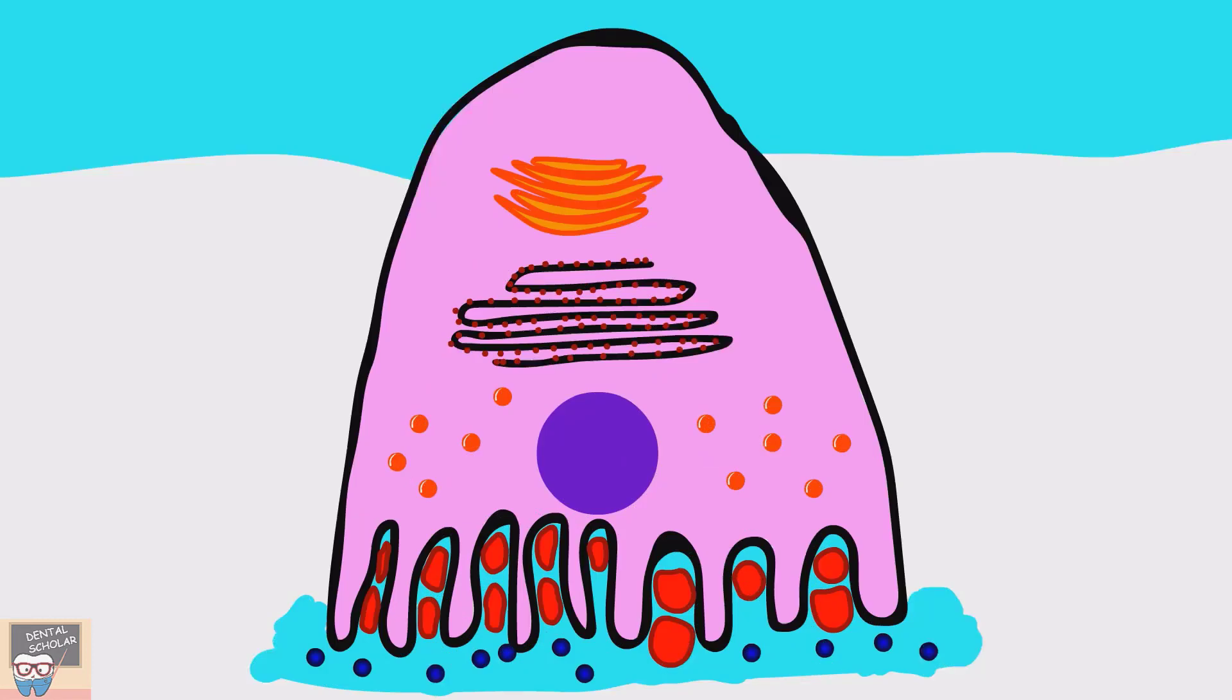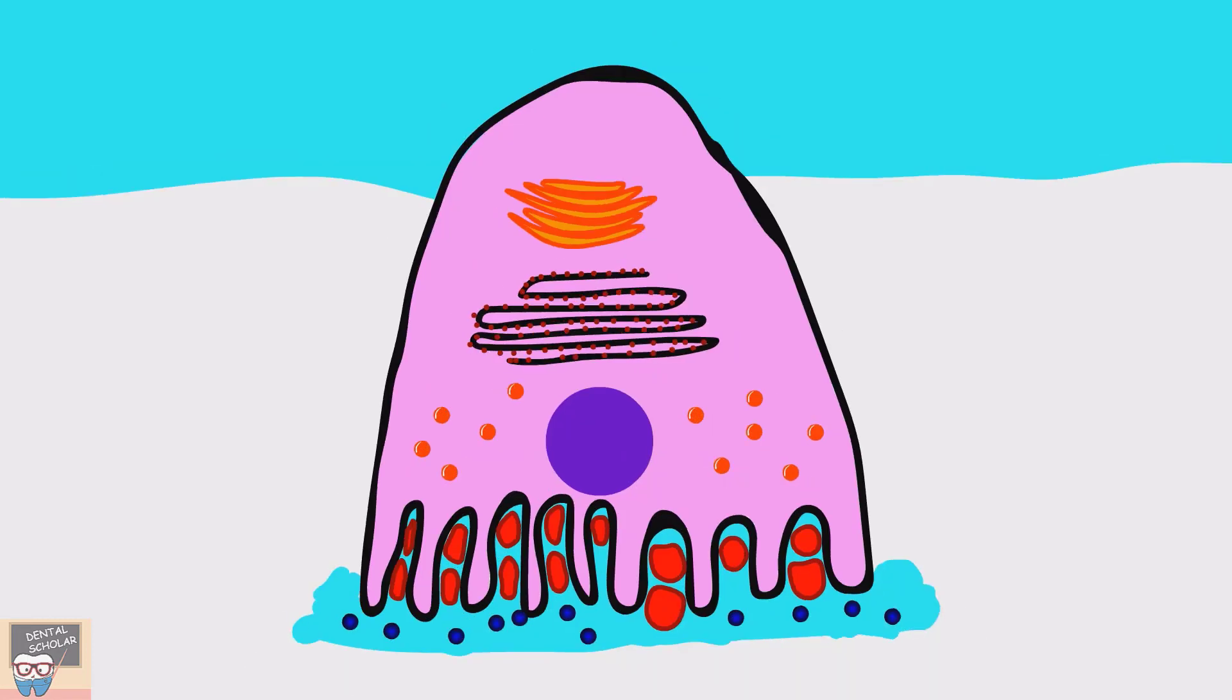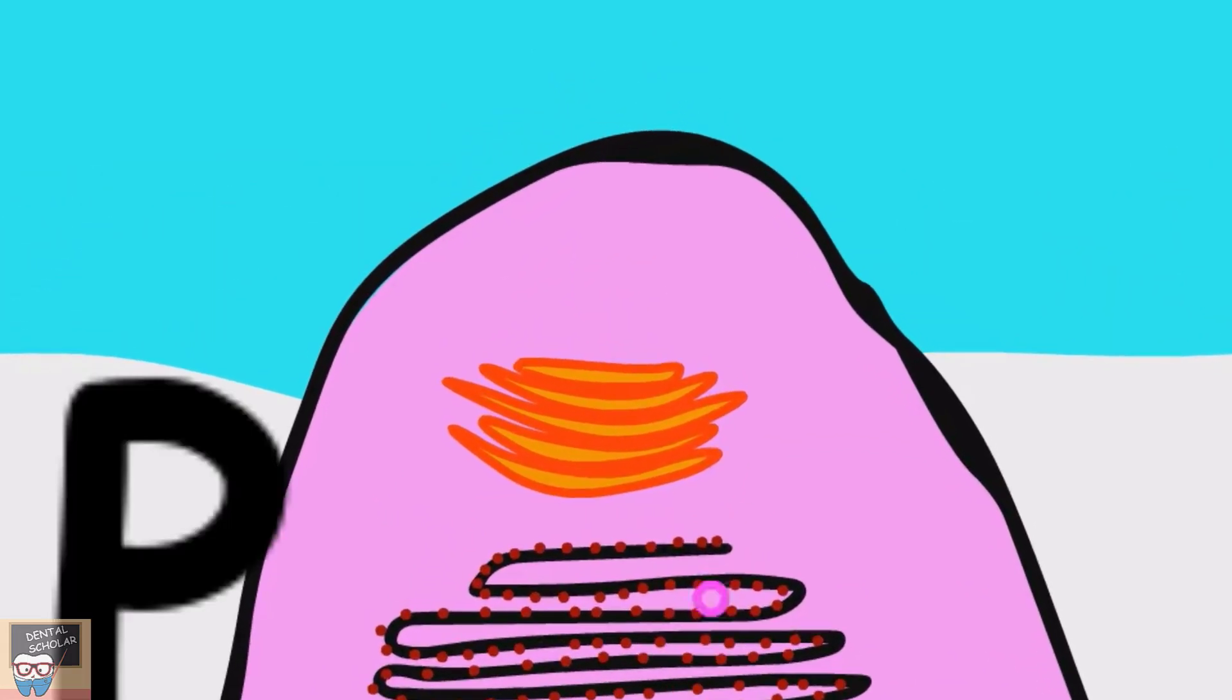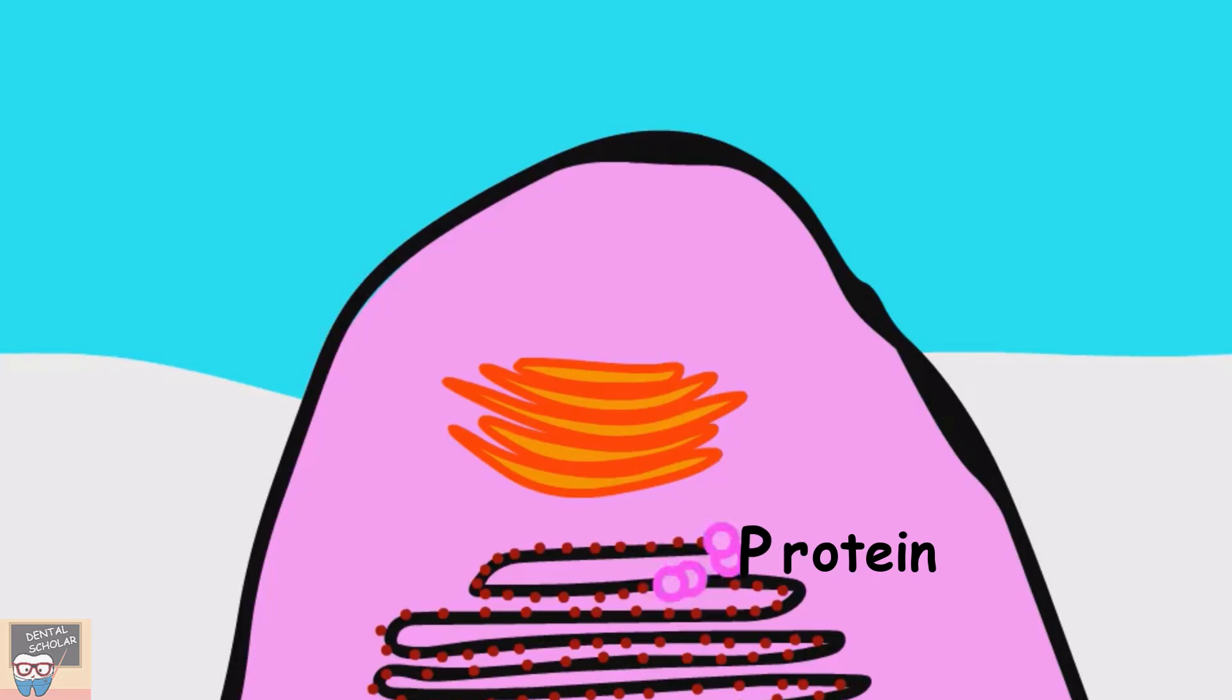Now, let's go to the protein part of saliva. The protein is produced in rough endoplasmic reticulum. From here, it is carried to Golgi complex, where it is modified, and when it is modified, it is packed into transport vesicles.